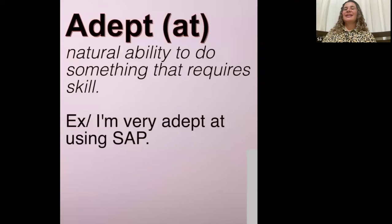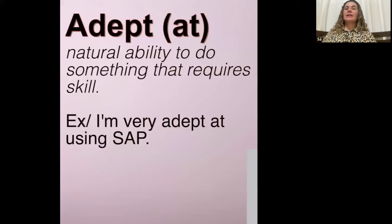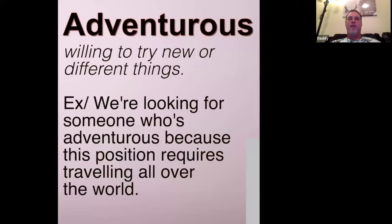The next word is adept — a natural ability to do something that requires skill. If you are adept at something, it means you're skilled at something, very good at something. For example: I'm very adept at using SAP. This word isn't one that's commonly used in everyday conversation, but it's good to know.